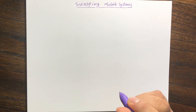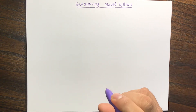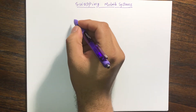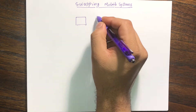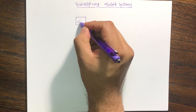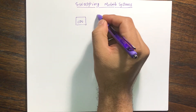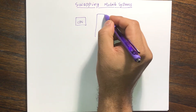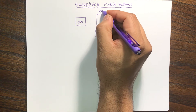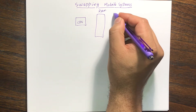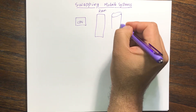Let's discuss swapping in mobile systems. In a traditional computer, there's a CPU, there's your RAM, and then there's your hard disk.